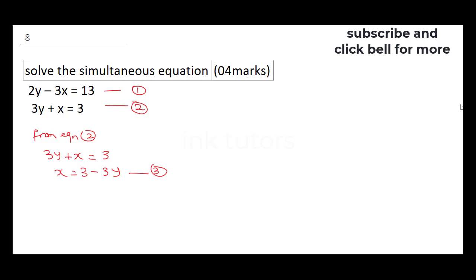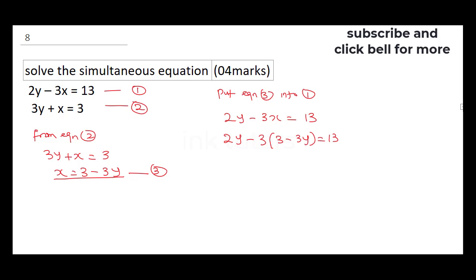I'm going to substitute equation 3 into equation 1. Equation 1 says 2y − 3x = 13. Wherever I see x, I put (3 − 3y): so 2y − 3(3 − 3y) = 13. This gives 2y − 9 + 9y = 13. Combining: 11y − 9 = 13.